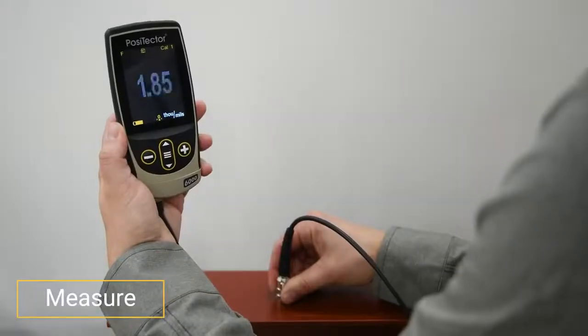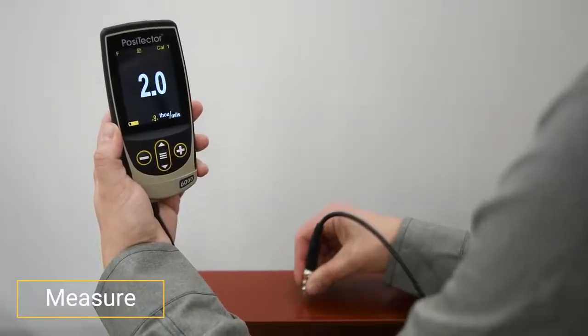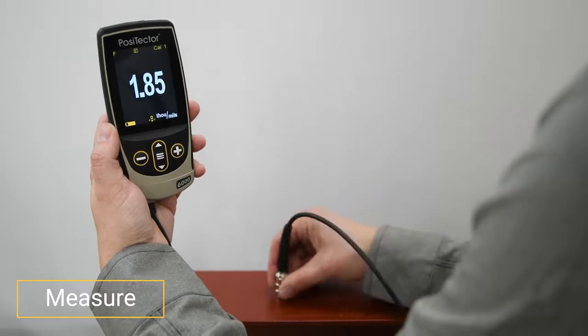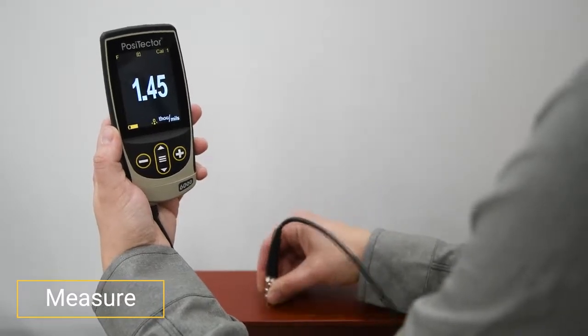Step 4: Measure. The PosiTector 6000 is now ready to measure. A single reading should seldom be trusted whether you are making a thickness determination or adjusting to a shim.